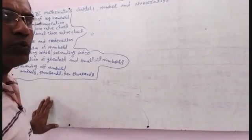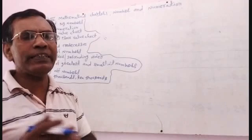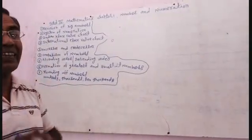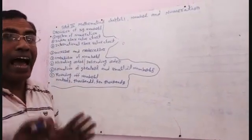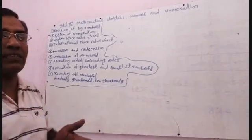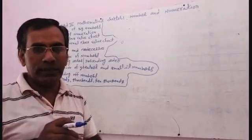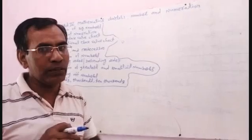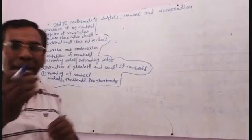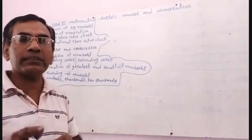Now I am going to the third topic: Successor and Predecessor. As students, you have read about successor. Successor comes from the word 'success', meaning you will add one to any given number. Predecessor means 'back', meaning you have to subtract one from any given number.